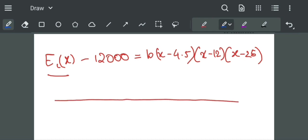First, we will draw a number line on which we will put the roots for which EL(x) minus 12,000 becomes 0. So for x equal to 4.5, this right-hand side becomes 0, x equal to 12, and x equal to 25.